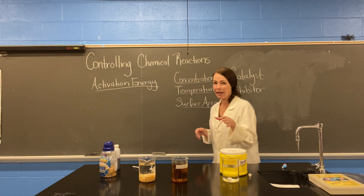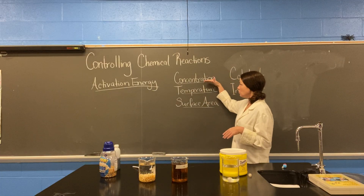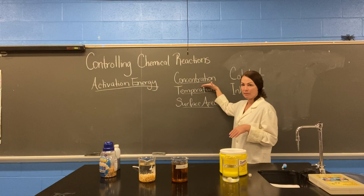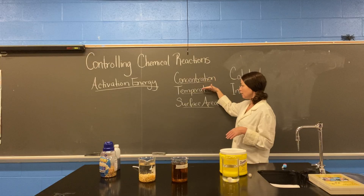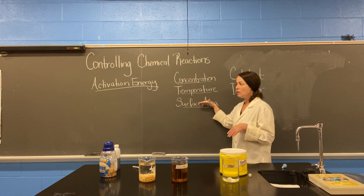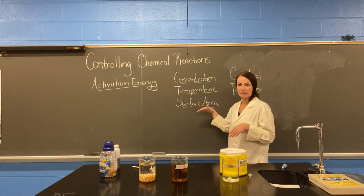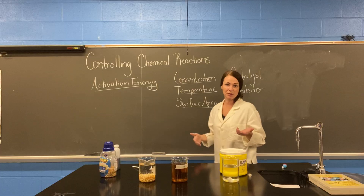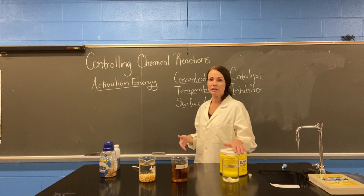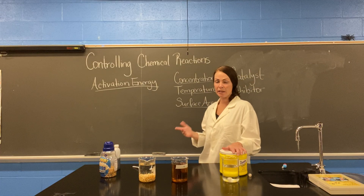So again, these are the three things we can use to change the speed of a chemical reaction: concentration, temperature, and surface area. Sometimes we use these in a science lab, sometimes in your kitchen, and sometimes it happens naturally.